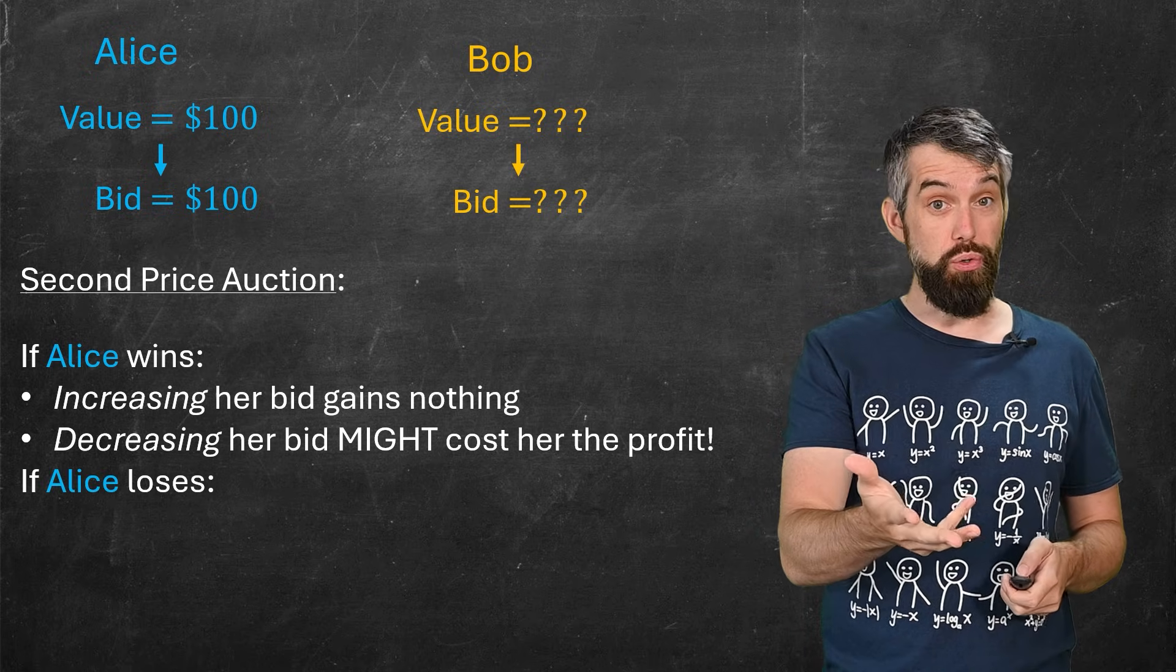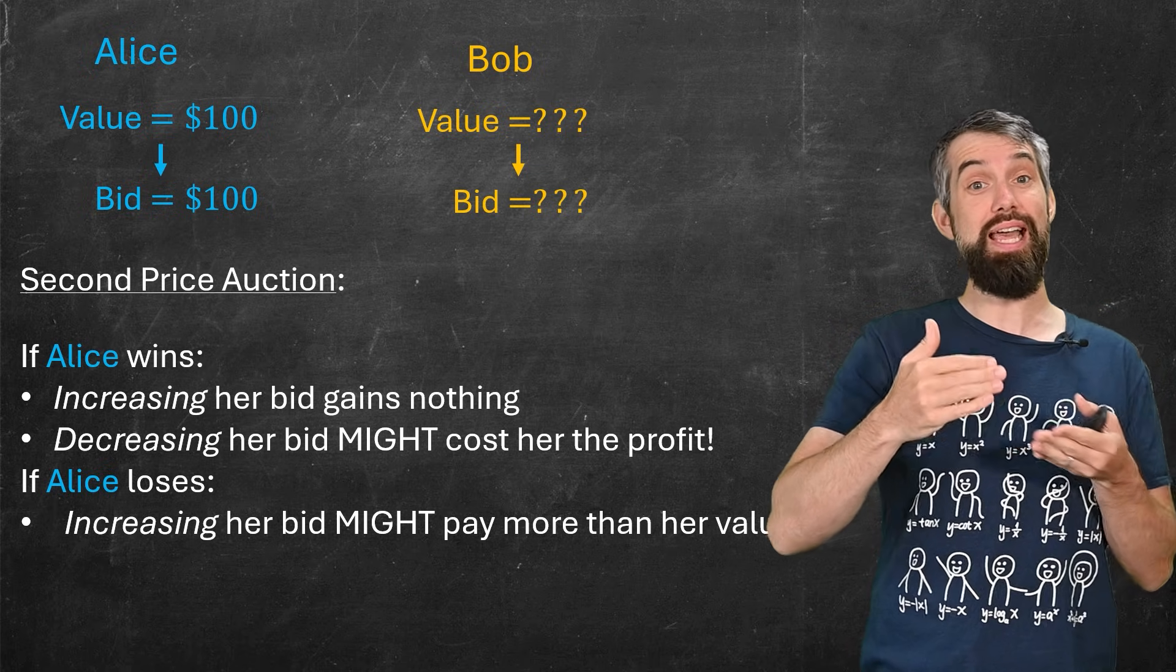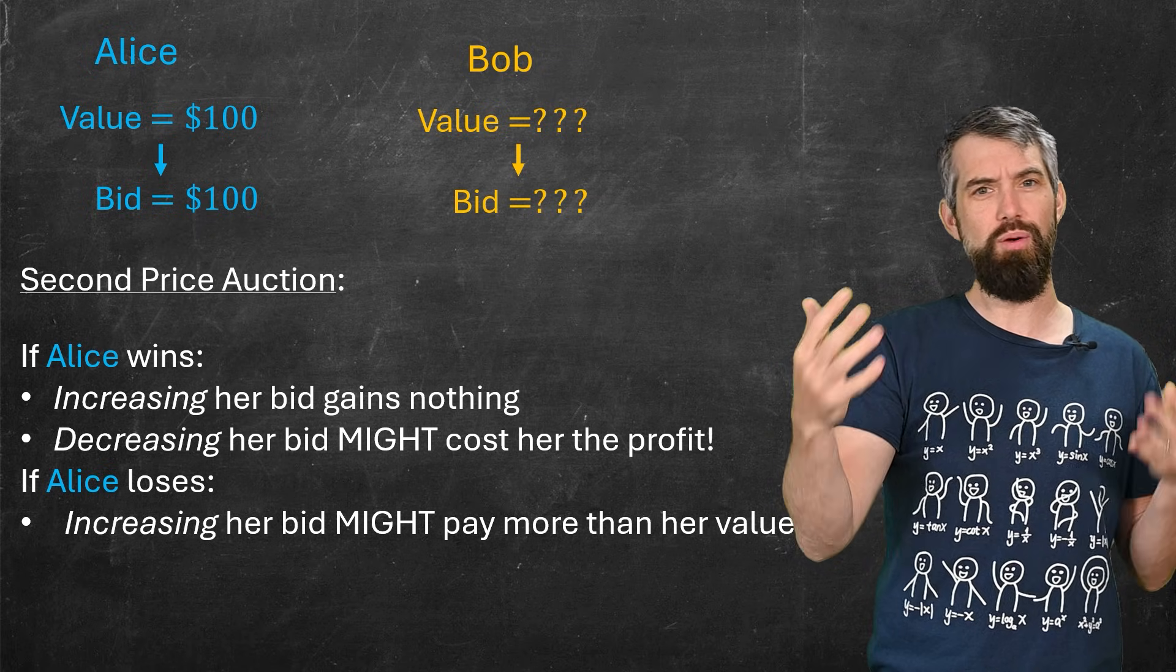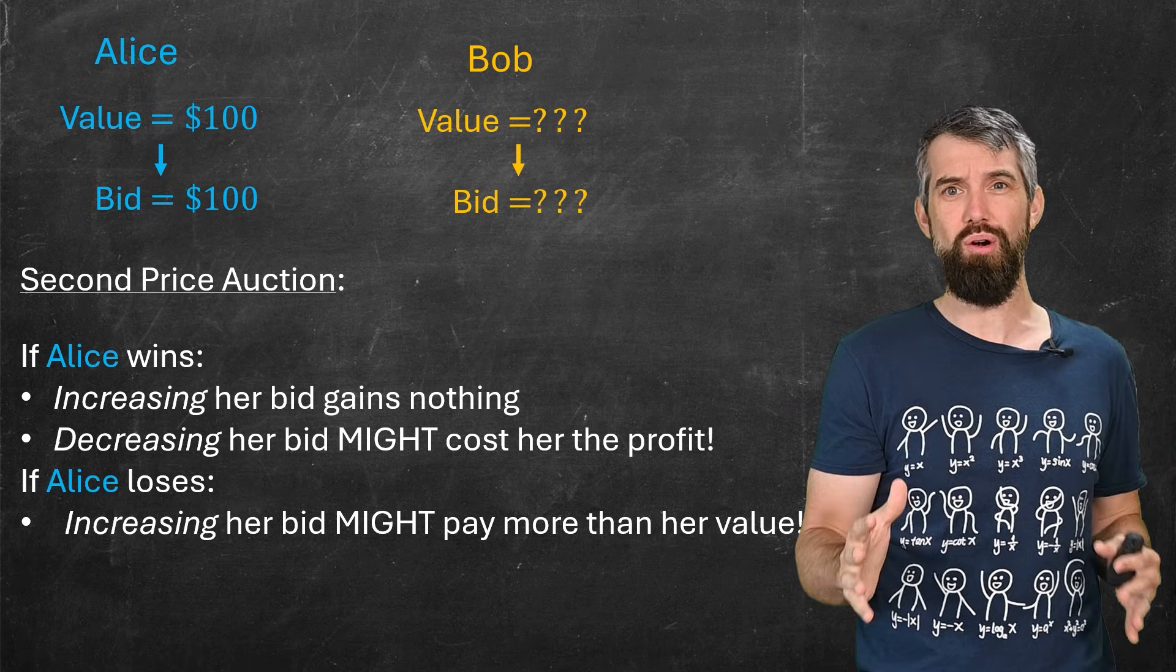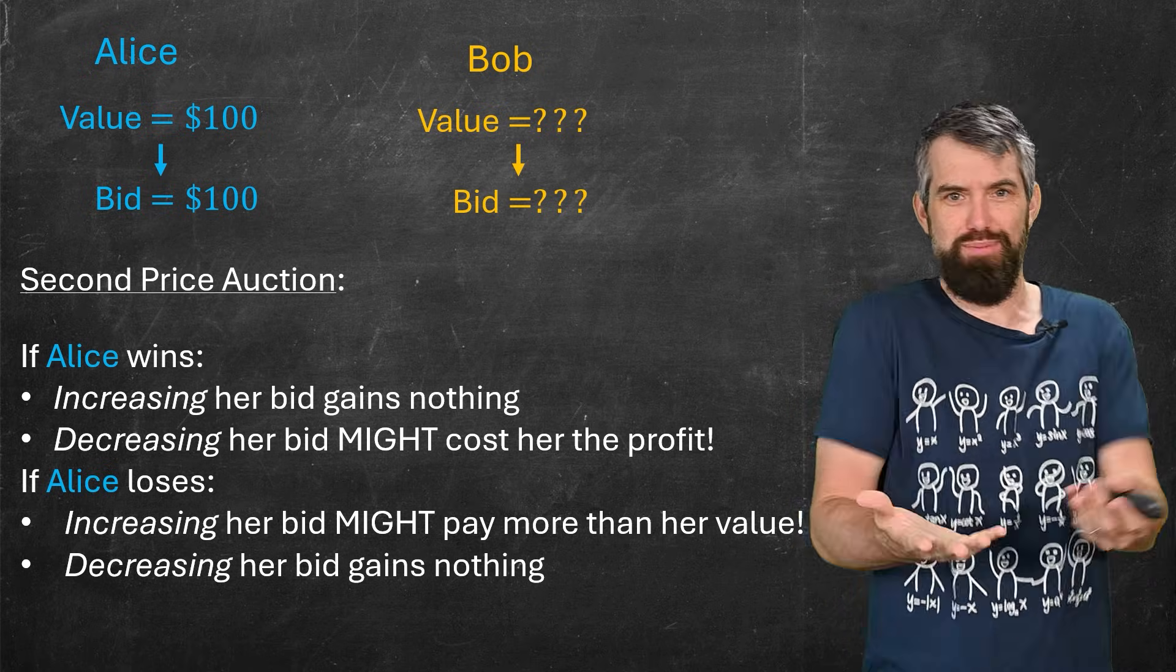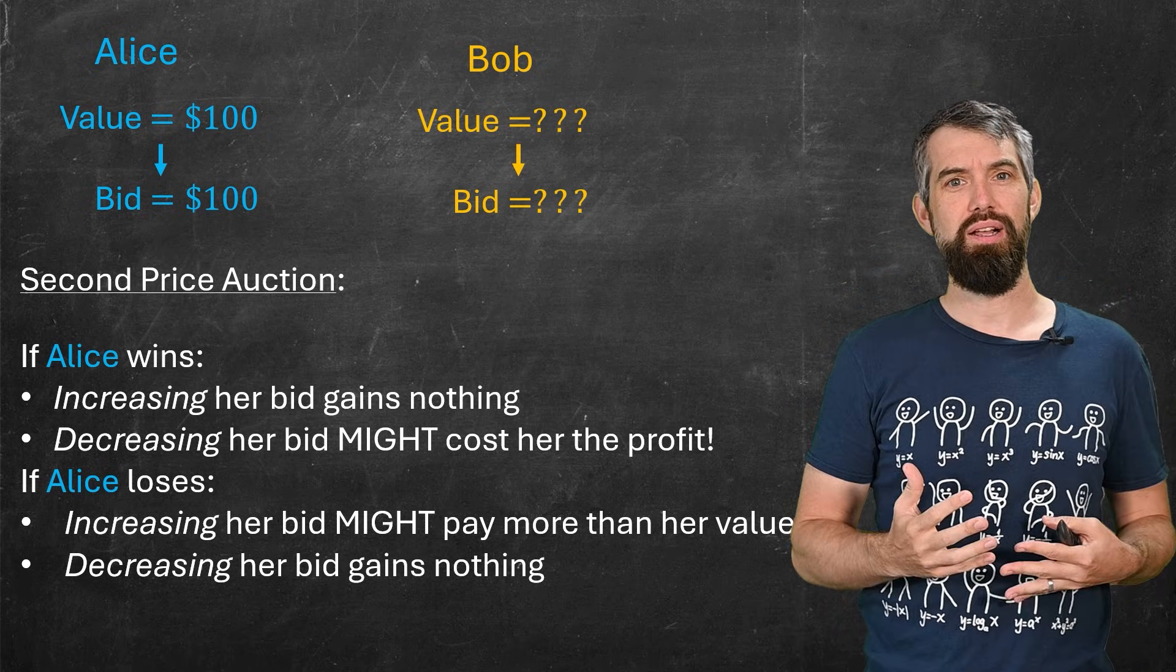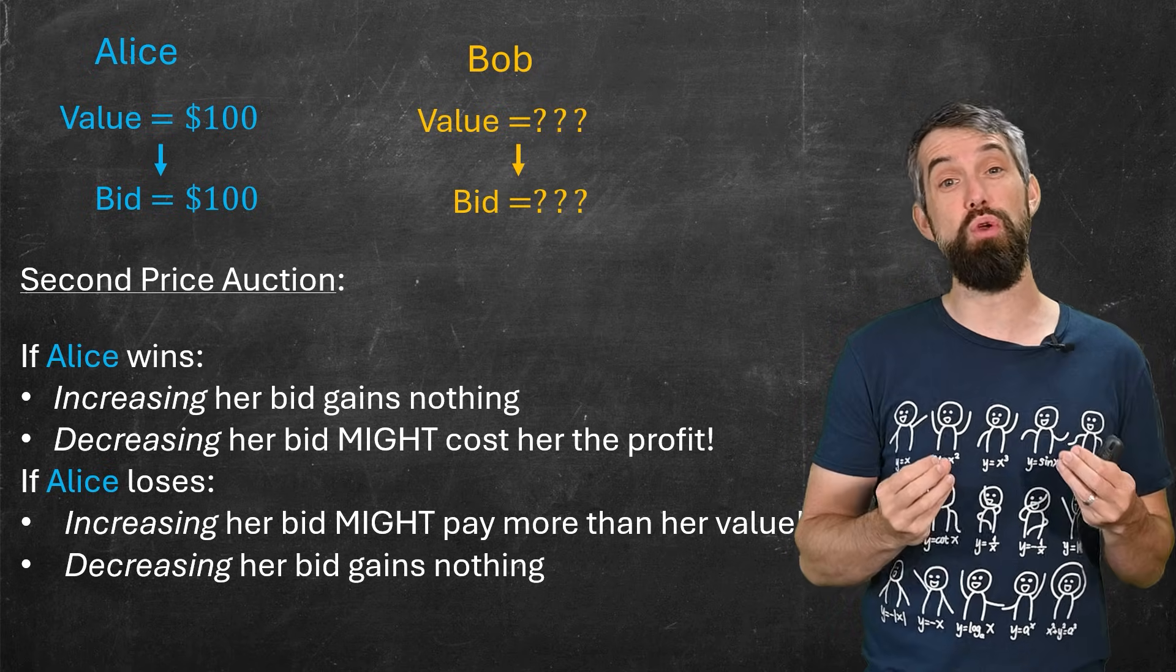If Alice were to lose, then if Alice increases her bid, that could be disastrous. Because then she would be paying more money, if that helps her win, than what she truly values it. Like, maybe she thinks it's worth $100, but she has to pay $110 for it. That would be terrible. But if she's lost, decreasing doesn't change anything. She's already lost, she still loses. So in all of these cases, there's no incentive for her to change from the true value of what she believes.